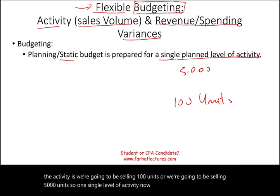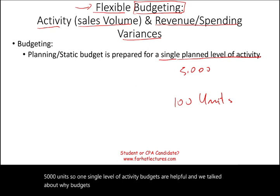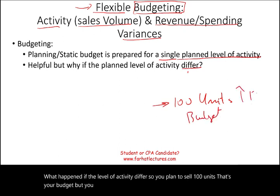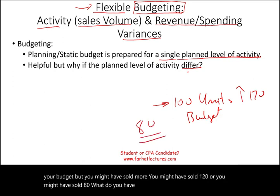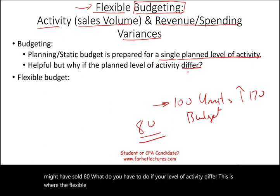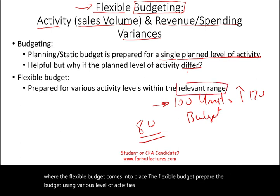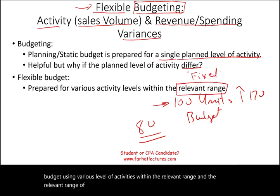Budgets are helpful because they help you plan. But what happens if the level of activity differs? You planned to sell 100 units, but you might have sold 120 or 80. This is where the flexible budget comes into place. The flexible budget prepares the budget using various levels of activity within the relevant range of fixed cost or our capacity.